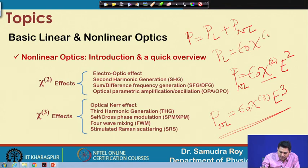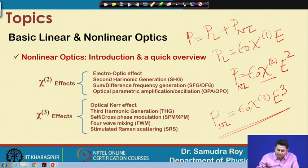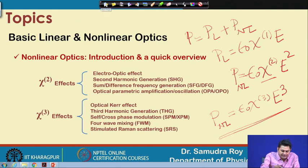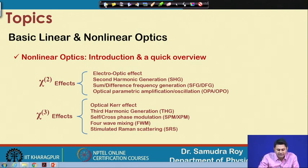In general, P is represented by P-linear plus P-nonlinear, where the P-linear term is the first order term: epsilon-0 times E. If I add the nonlinear term, we have two conditions: one where the term is related to E squared (chi-2 effect) and another where the term is related to E cubed (chi-3 effect).